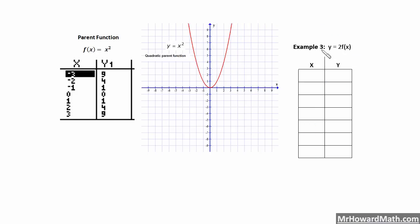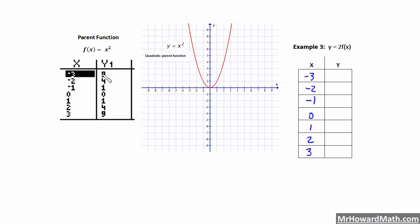Here we have our third example: y equals 2 times f of x. We are going to start with our parent function and apply this transformation. We are outside, away from x, so that is going to be a vertical stretch by a factor of 2. My y values are going to increase by a factor of 2 — we multiply all of the parent function y values by 2. But my x coordinates are going to stay the same. So my new y coordinate paired with negative 3, instead of 9, is now twice that — so it's 18.